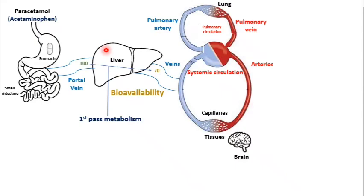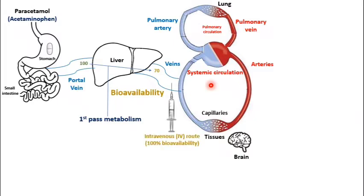How could we get 100% bioavailability — 100% of our dose into the systemic circulation directly? This is done by introducing the drug directly into the veins, so it gets directly into the systemic circulation. That means the drug is injected intravenously, and the intravenous (IV) route gives us 100% bioavailability.